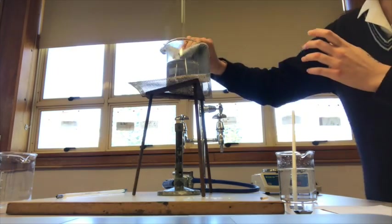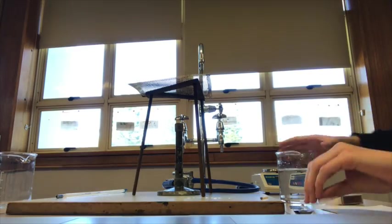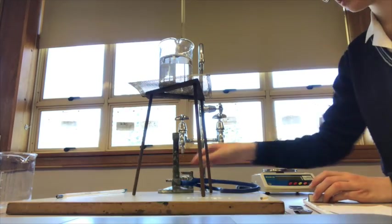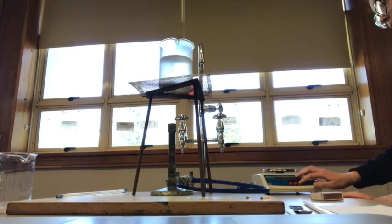Carefully remove the hot beaker with the heat resistant material and replace it with the beaker of salt solution. Repeat this process for three more beakers, adding 5 grams into the third beaker, 7.5 grams into the fourth beaker, and 10 grams into the last beaker.